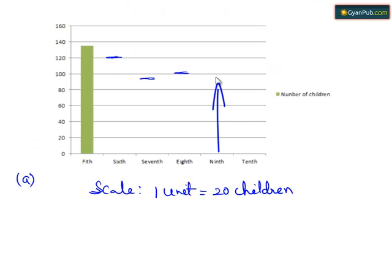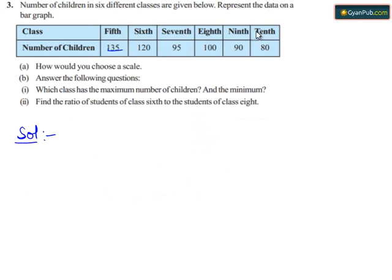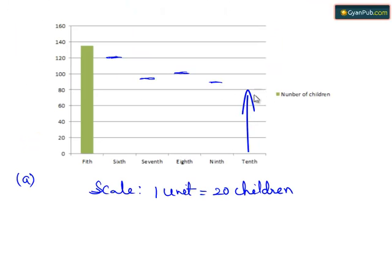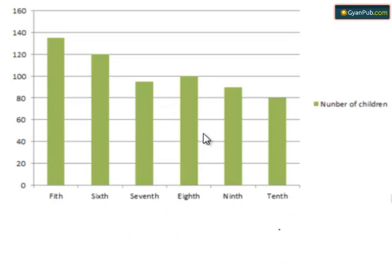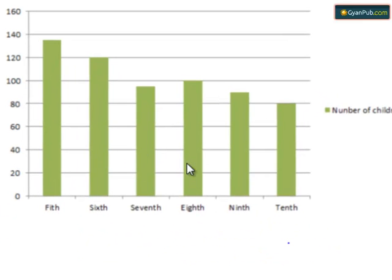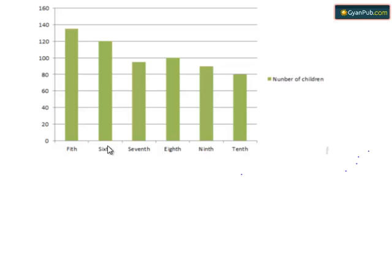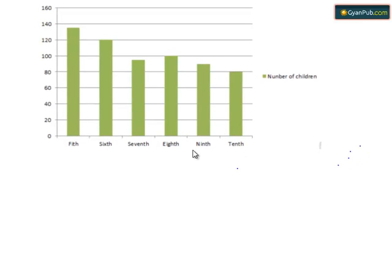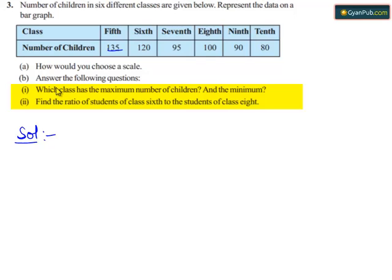For class 9th, the number of children were 90, so locate the point at 90. Now let us move on to the questions.